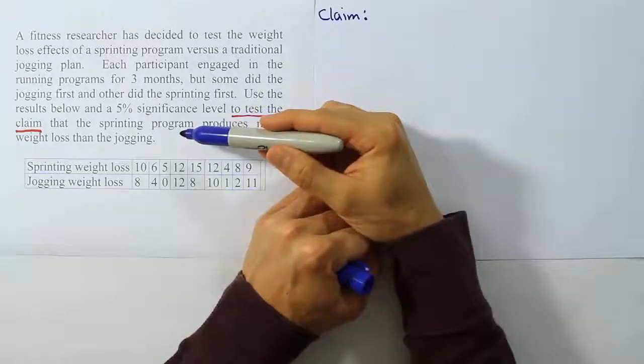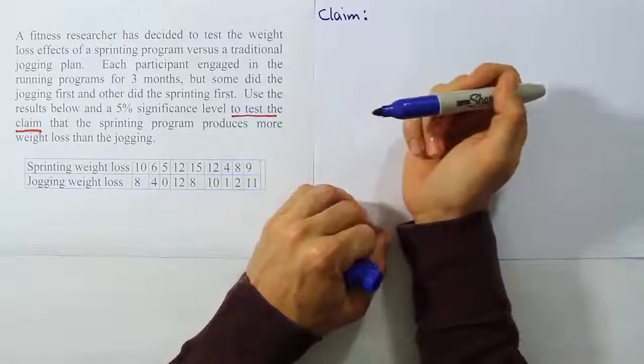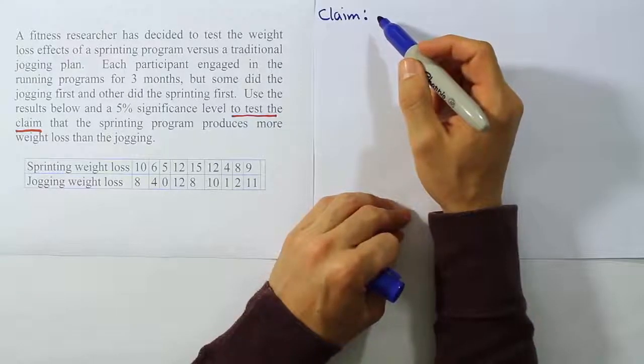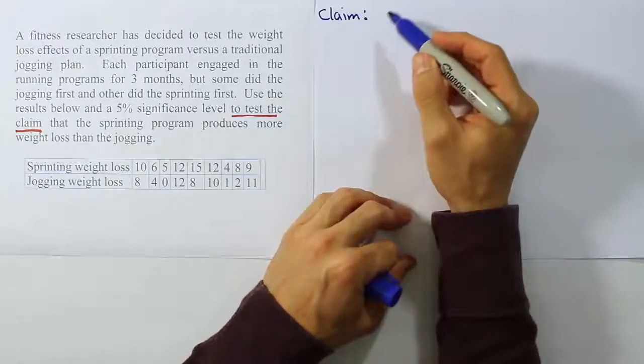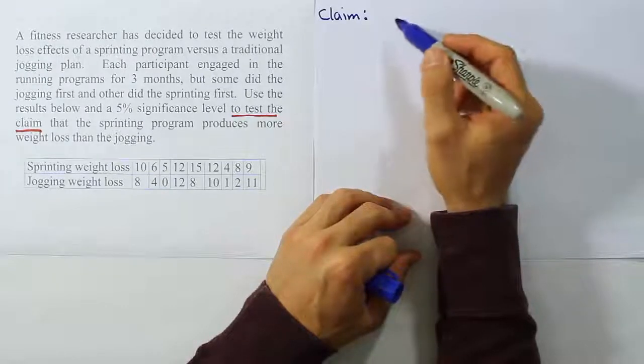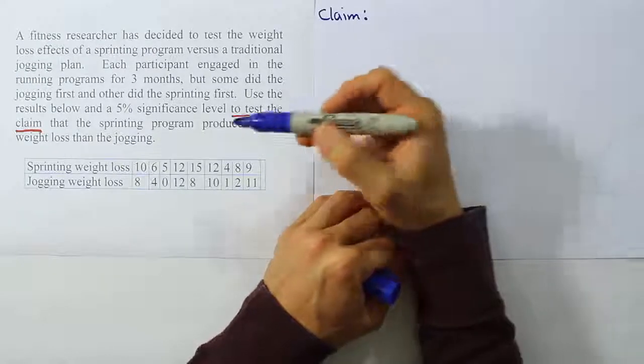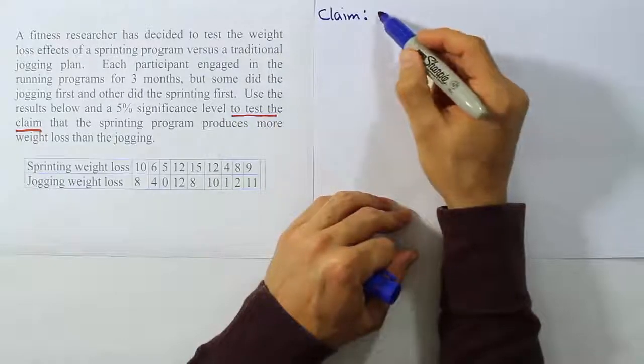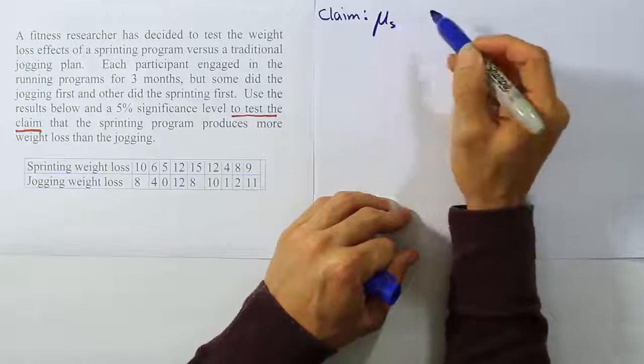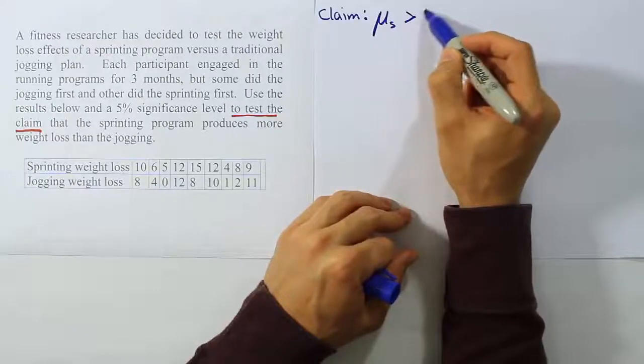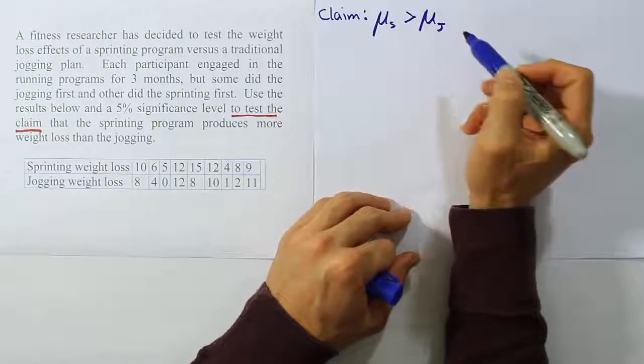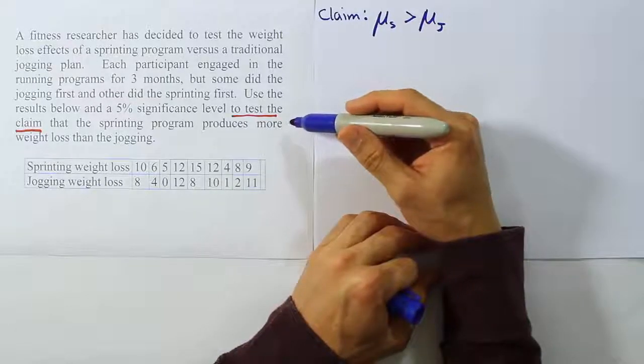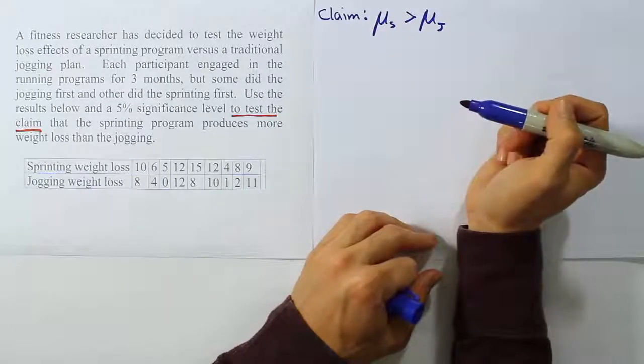The claim is here that the sprinting program produces more weight loss than the jogging program. In the last video I did the claim one way that's commonly done. I'm going to do it another way now to show you an alternative method. If I just read the statement that sprinting produces more weight loss than the jogging that would mean that the average for the sprinting program is greater than the average for the jogging program. And if we did that it's pretty straightforward. It's just being translated directly from the words in the problem.